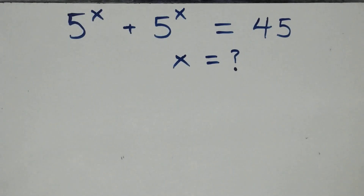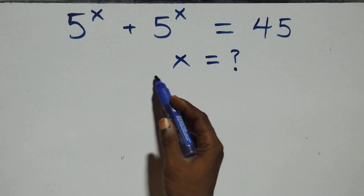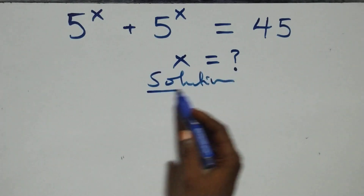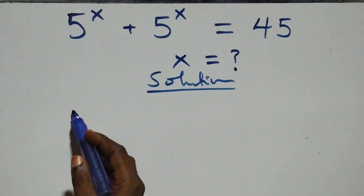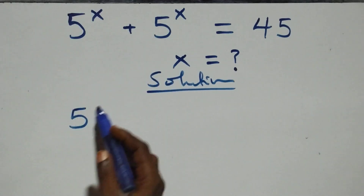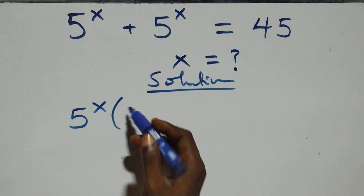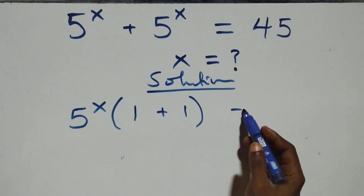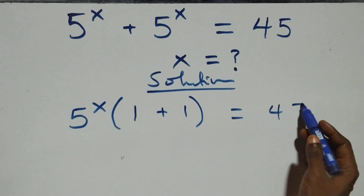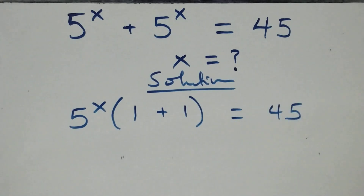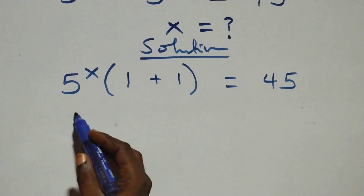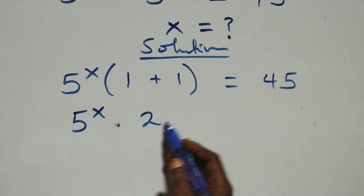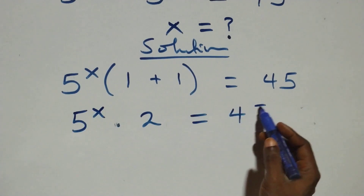Welcome. How to solve this nice exponential equation. From here, we factor 5 raised to power x out, that is 5 raised to power x, into bracket 1 plus 1 inside, equals to 45 on this side. So we have 5 raised to power x times 1 plus 1, that's 2, equals to 45.